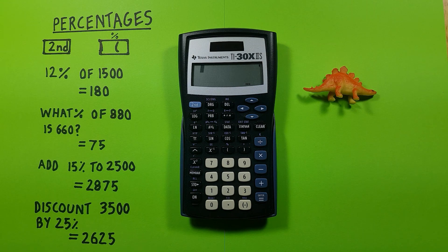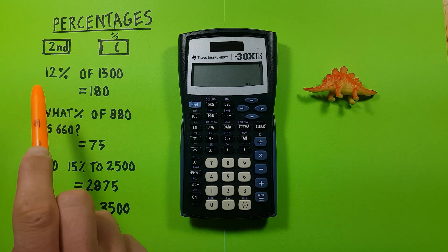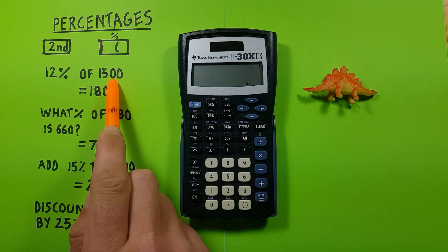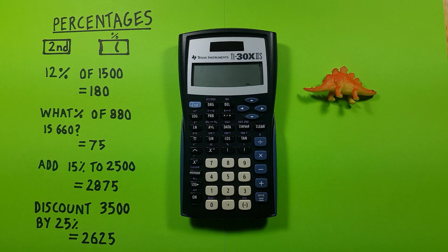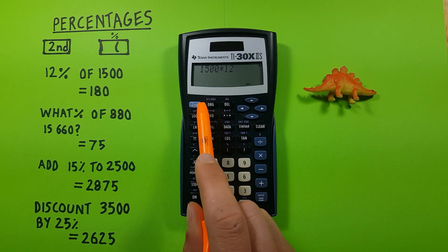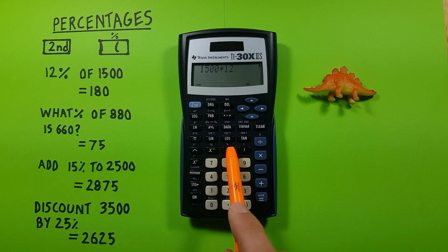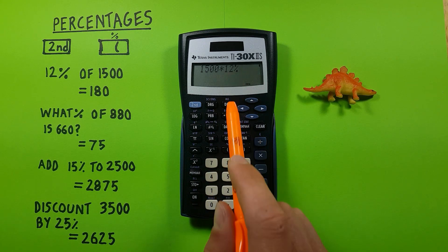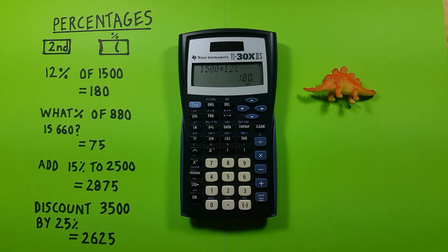To get started, if we wanted to figure out how much 12% of 1500 was, we would enter 1500 on the screen, and then multiply by 12, second function, the bracket to bring up the percentage, and then press equals. We see that 12% of 1500 is equal to 180.